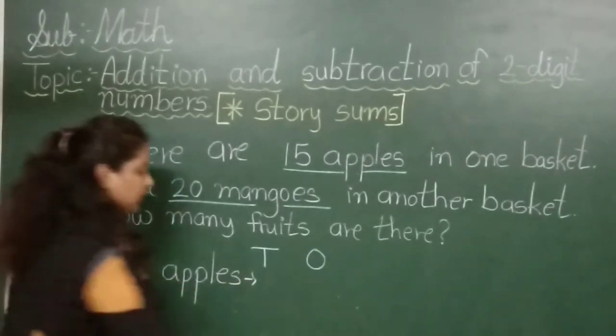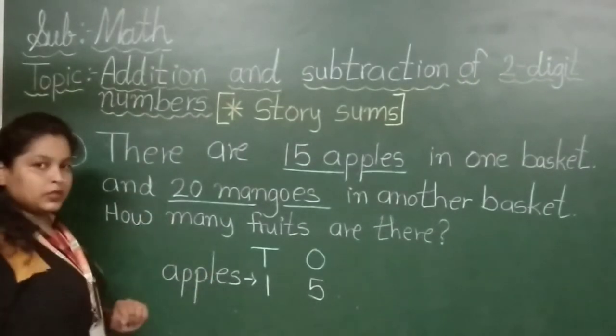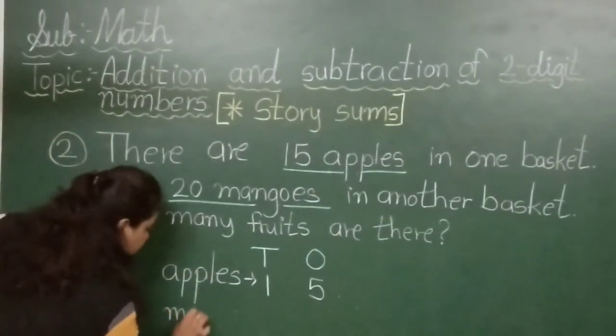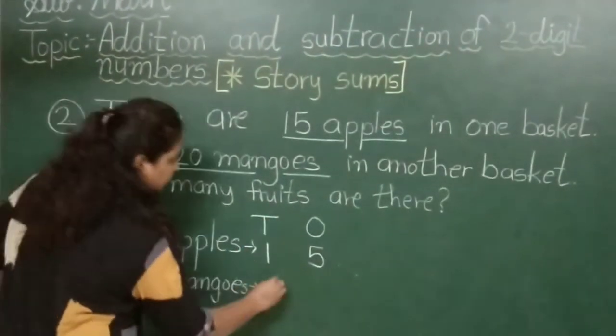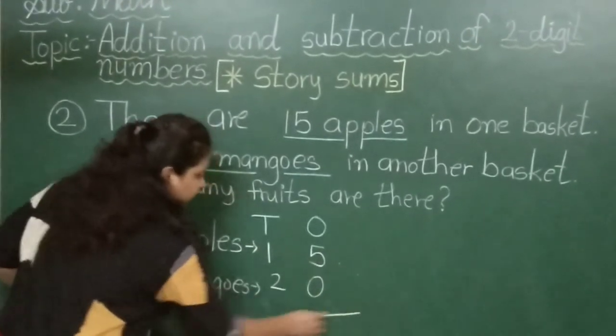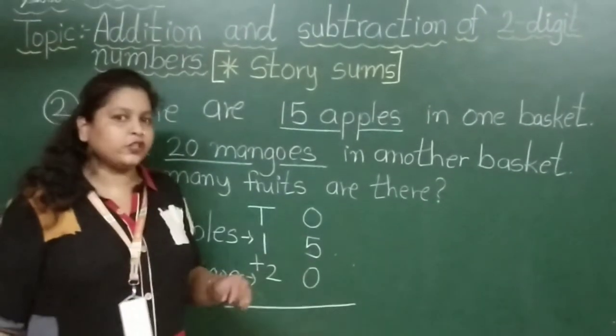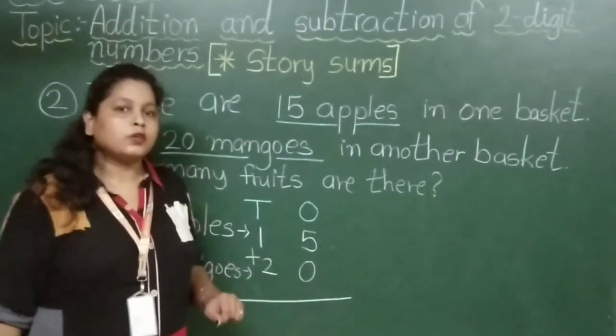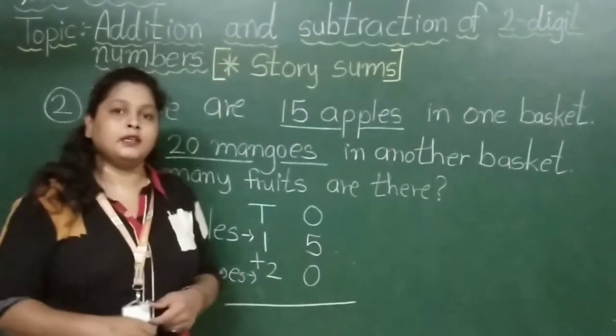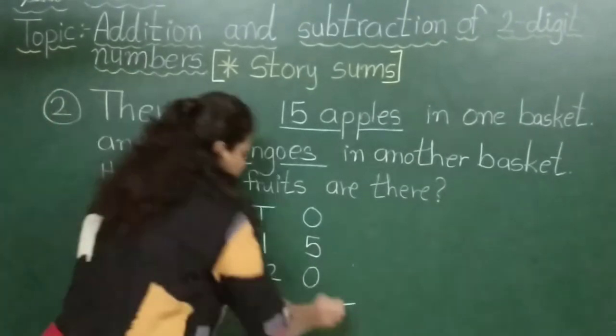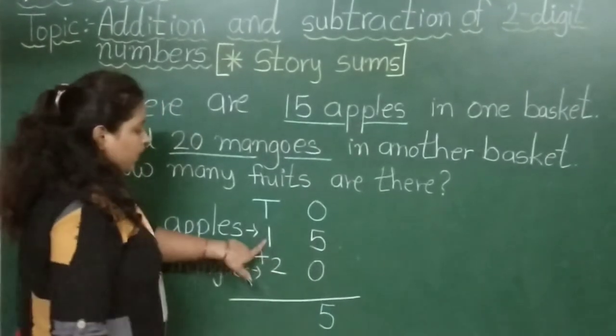1, 5, 15. And how many mangoes are there? We write mangoes: 2, 0, 20. Now what will we do? Plus, that means addition. So 5 plus 0. If we add any number with 0, what do we get? Yes, the same number. So our answer here is 5.